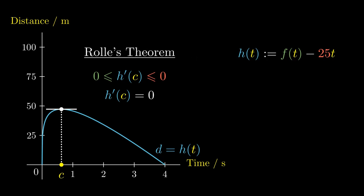But since h of t is defined by f of t minus 25t, we can differentiate on both sides. The left side would be the derivative of h at t, and the right side would be the derivative of f at t subtracted by 25.